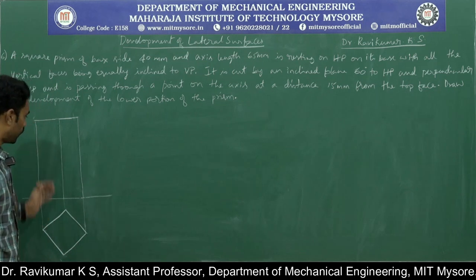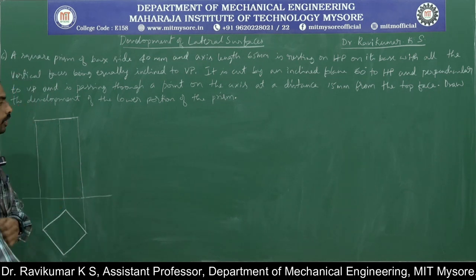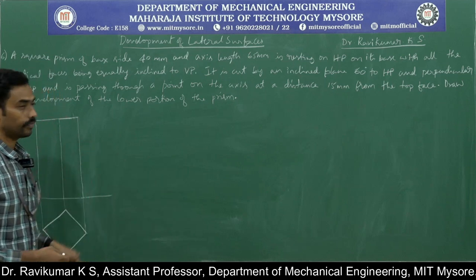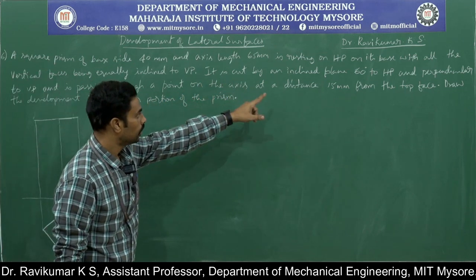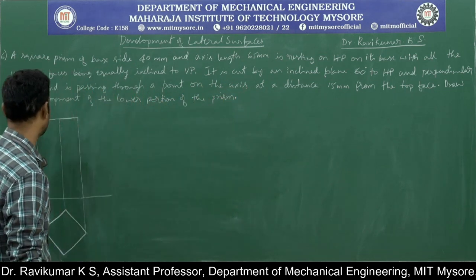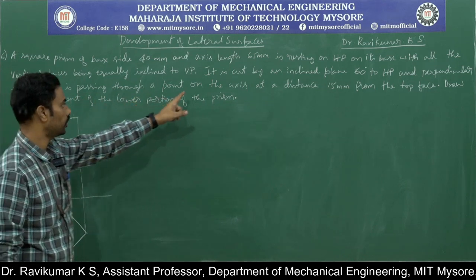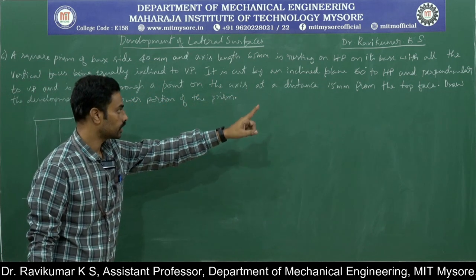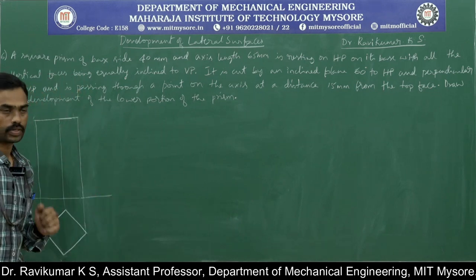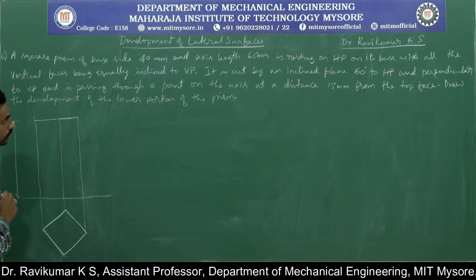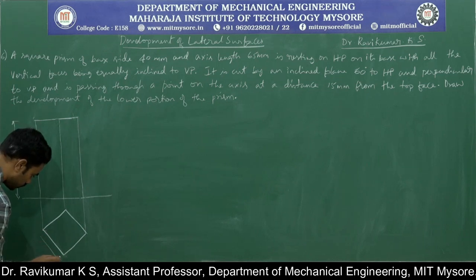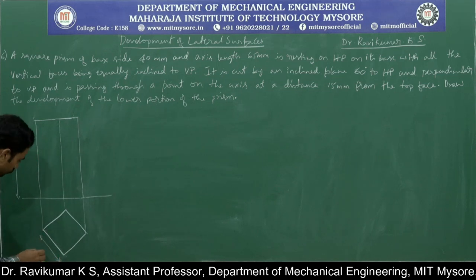This is the top view and the front view of the said problem. You are familiar with drawing the top view and front view given these conditions. We will now address the section plane. The section plane is 60 degrees to HP and perpendicular to VP, and it should pass through a point on the axis at a distance of 15mm from the top face. The height of the prism is 65mm and the side is 40mm.